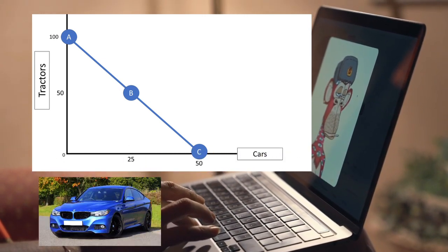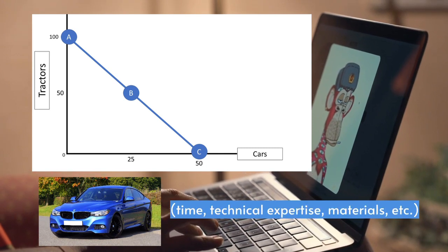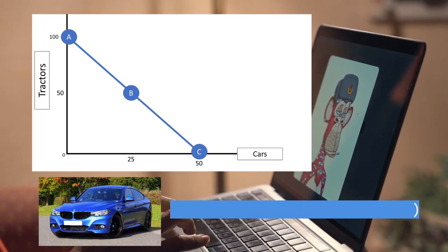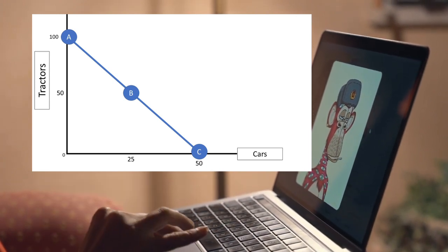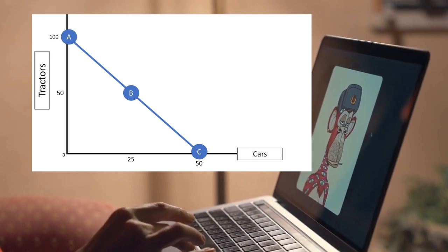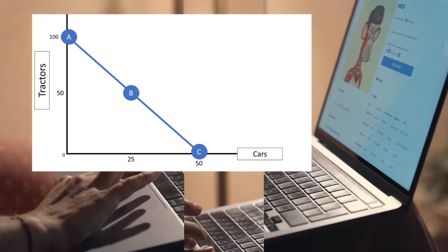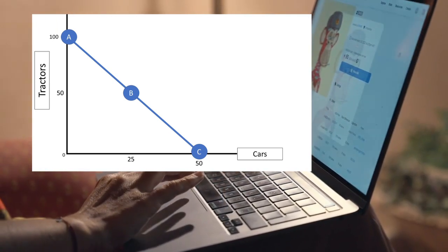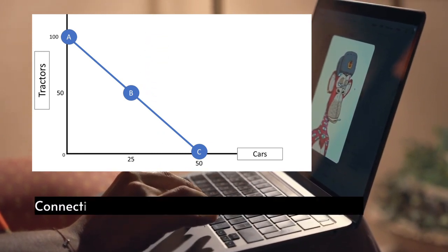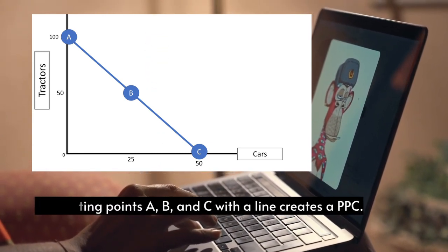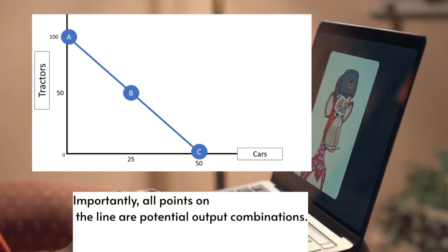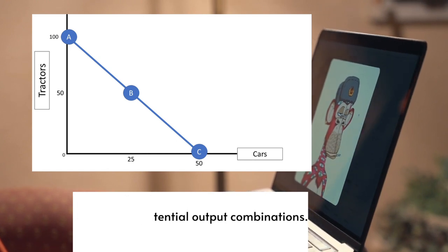From this, we can infer that cars require more resources like time, technical expertise, material, and so on to produce. The factory owner may choose to allocate half of their resources to tractors and half to cars and produce at point B. Connecting points A, B, and C with a line creates a PPC.